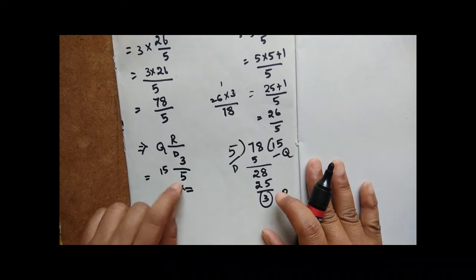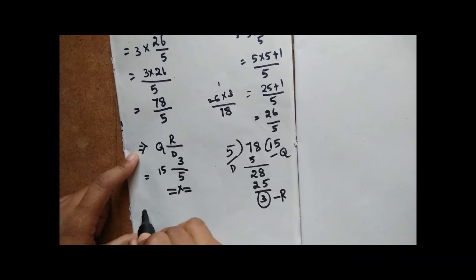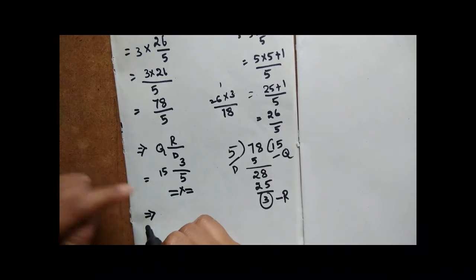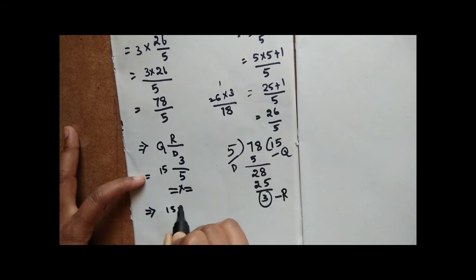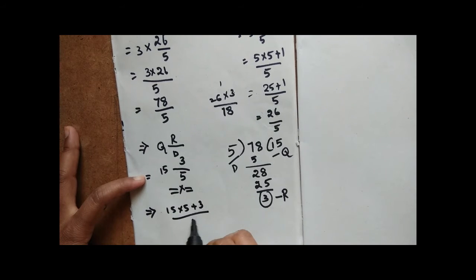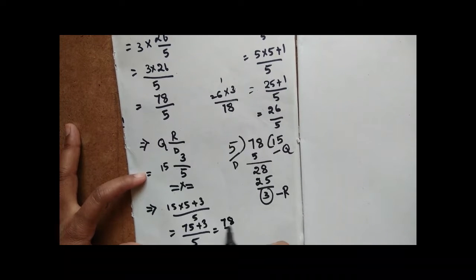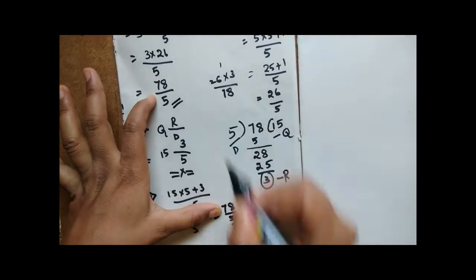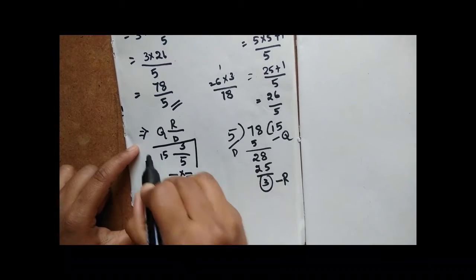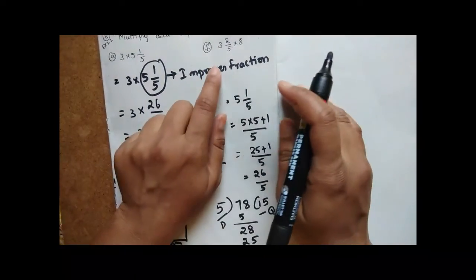The formula for converting an improper fraction to a mixed fraction is: quotient remainder by divisor. So the answer is 15 and 3 by 5, that is 15⅗. To verify: 15 into 5 plus 3 by 5 equals 75 plus 3 by 5, which is 78 by 5. Correct.